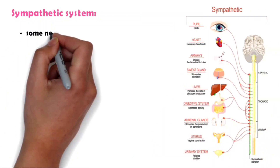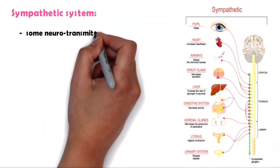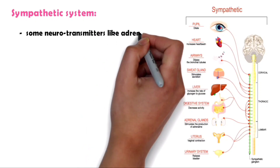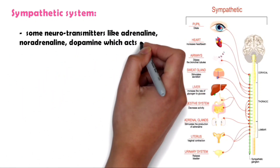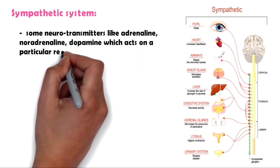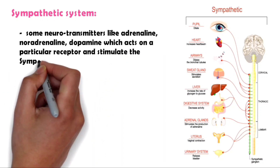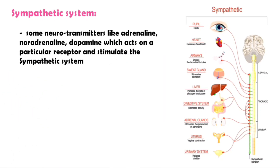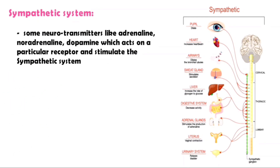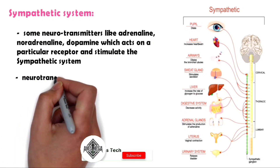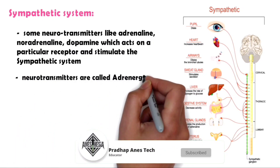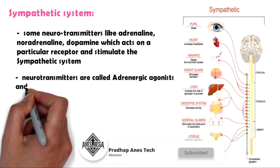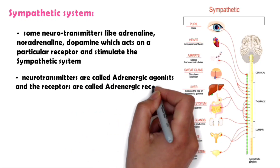In the sympathetic system, there are neurotransmitters like adrenaline, noradrenaline, and dopamine, which act on particular receptors and stimulate the sympathetic system. These neurotransmitters are called adrenergic agonists and the receptors are called adrenergic receptors.